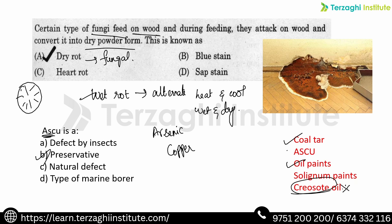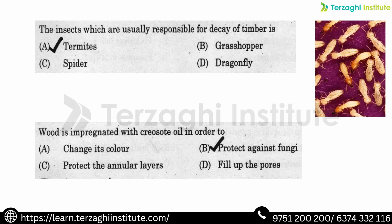Common timber preservation methods include solignum and pancer. The insects which are usually responsible for the decay of timber — the insects that cause timber decay — one answer is termites. Termites are one of the main causes of insect-related timber decay.